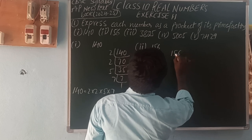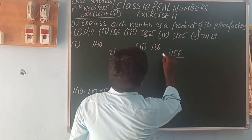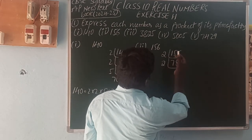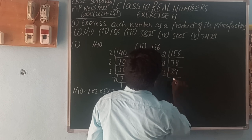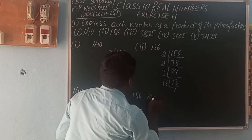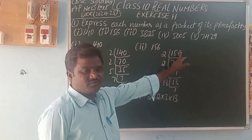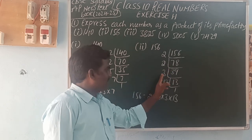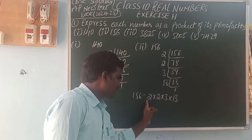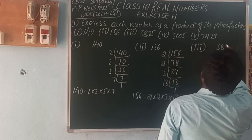Next, the second number is 156. We can divide 156 with prime numbers. Dividing by 2 gives 78, by 2 gives 39, by 3 gives 13, by 13 gives 1. So 156 can be written as 2 × 2 × 3 × 13. The prime factors of 156 are 2, 3, and 13.